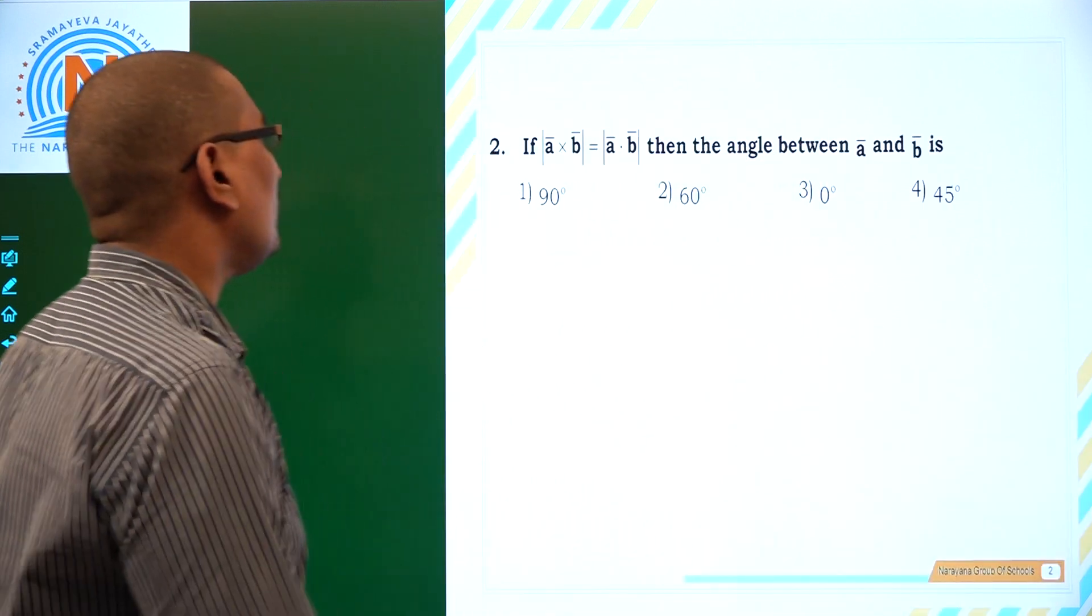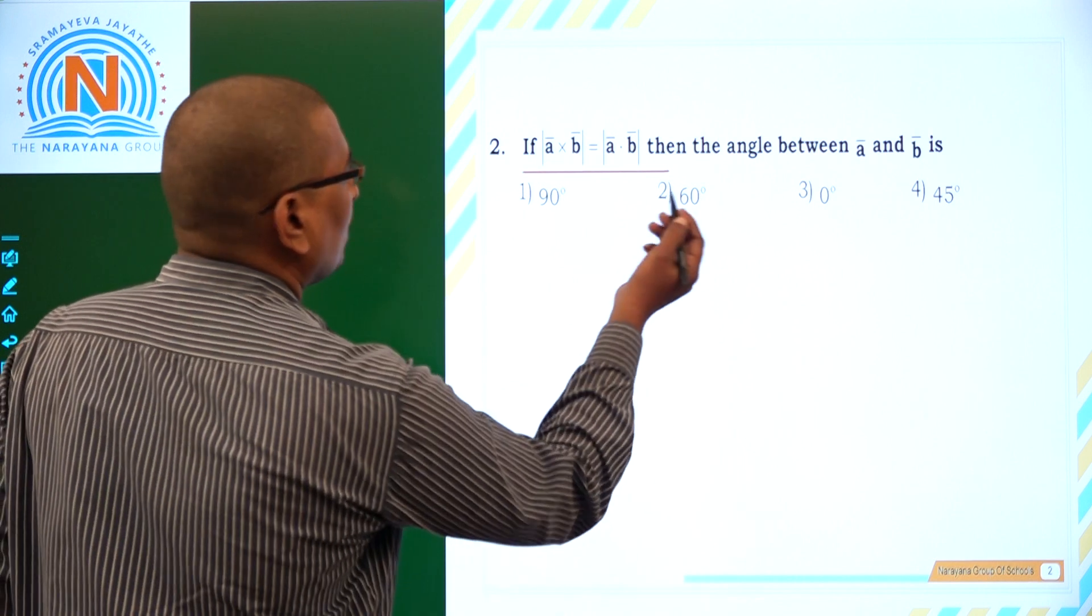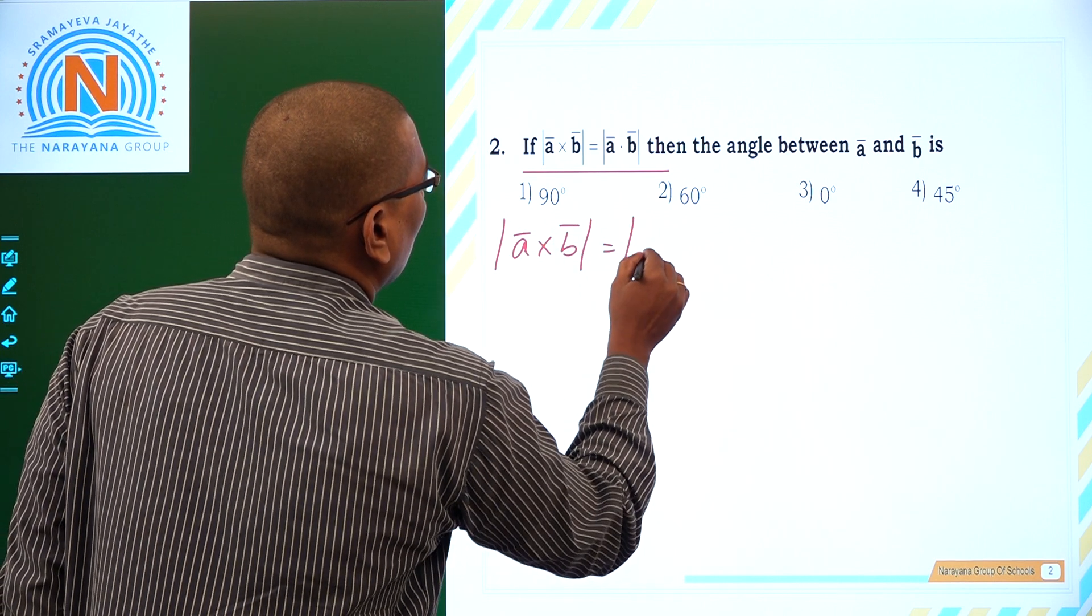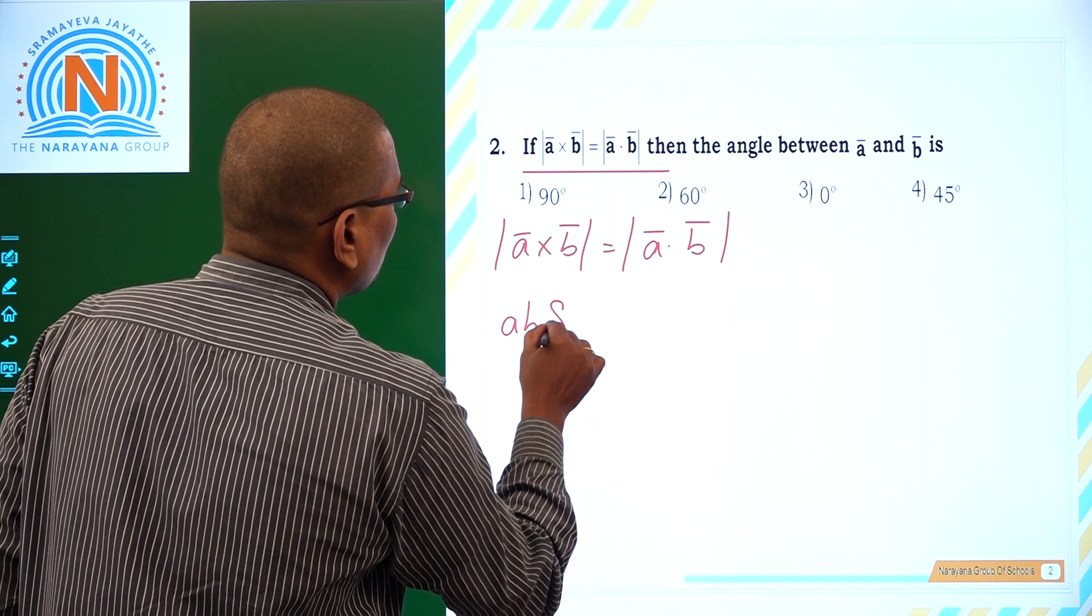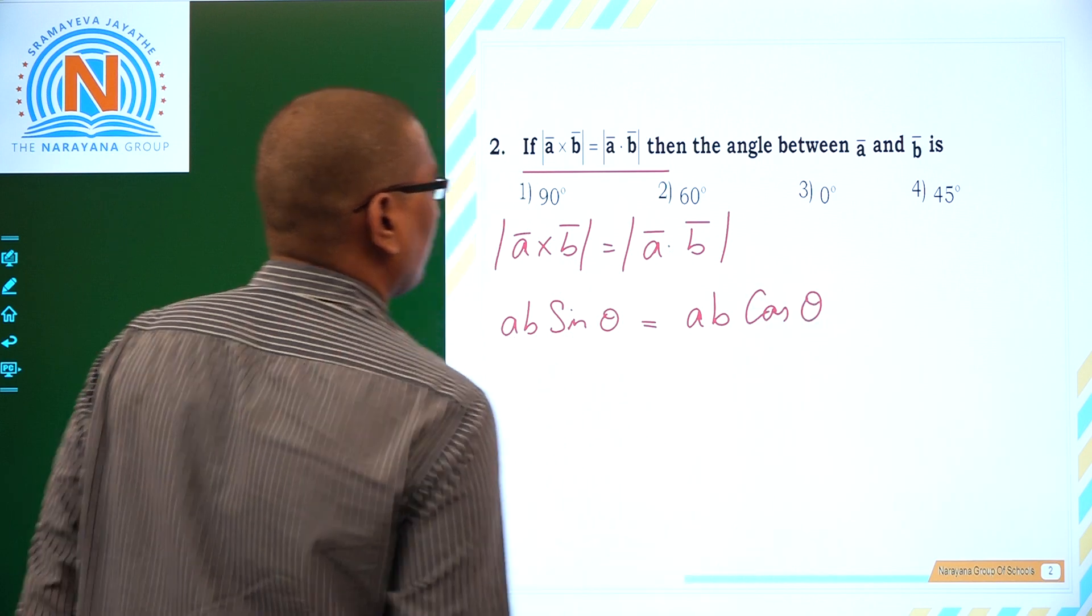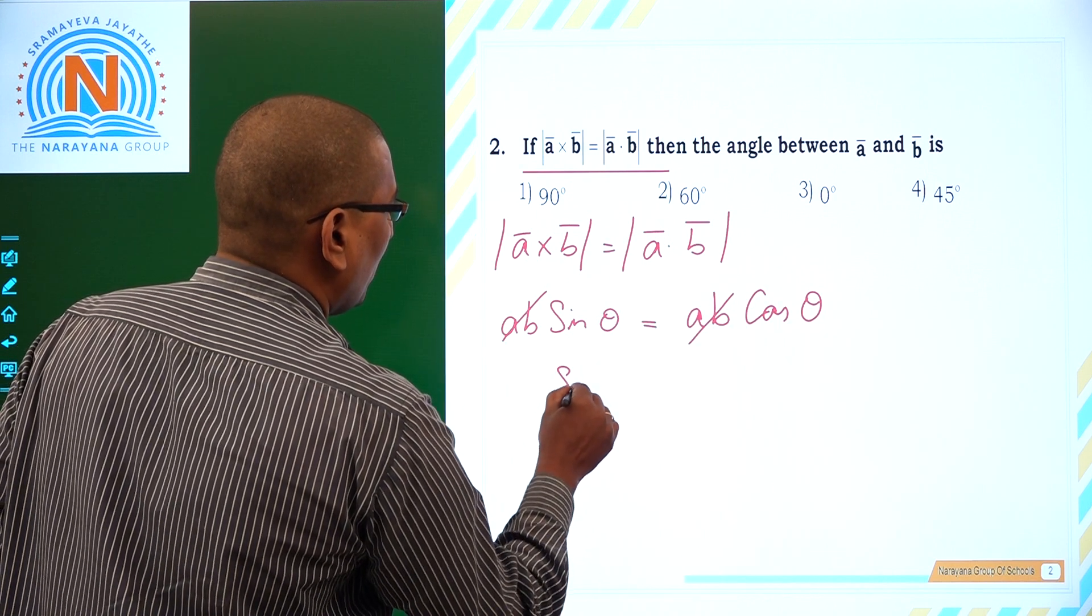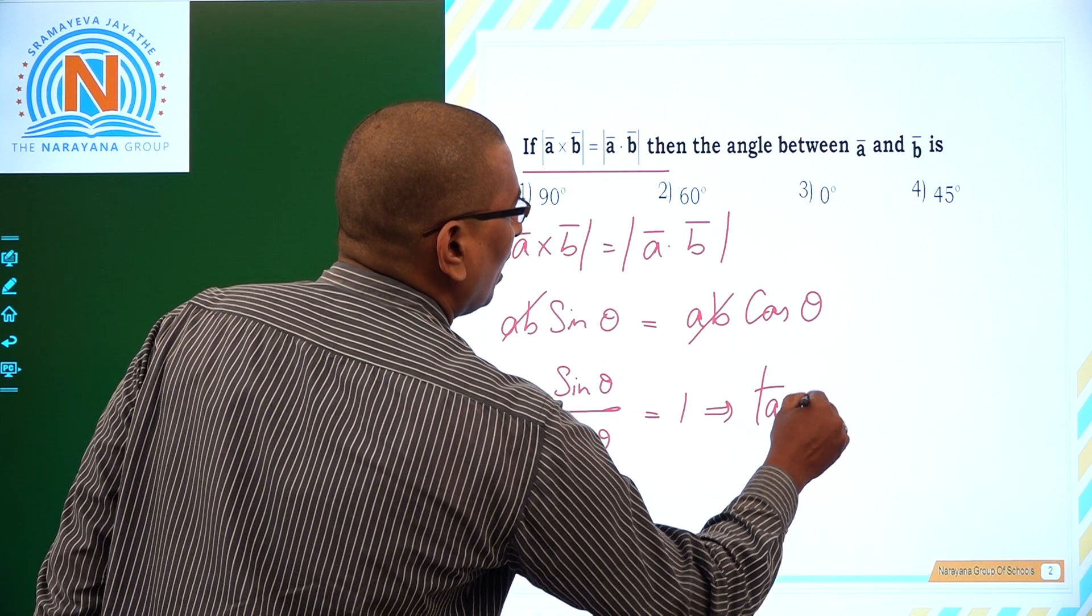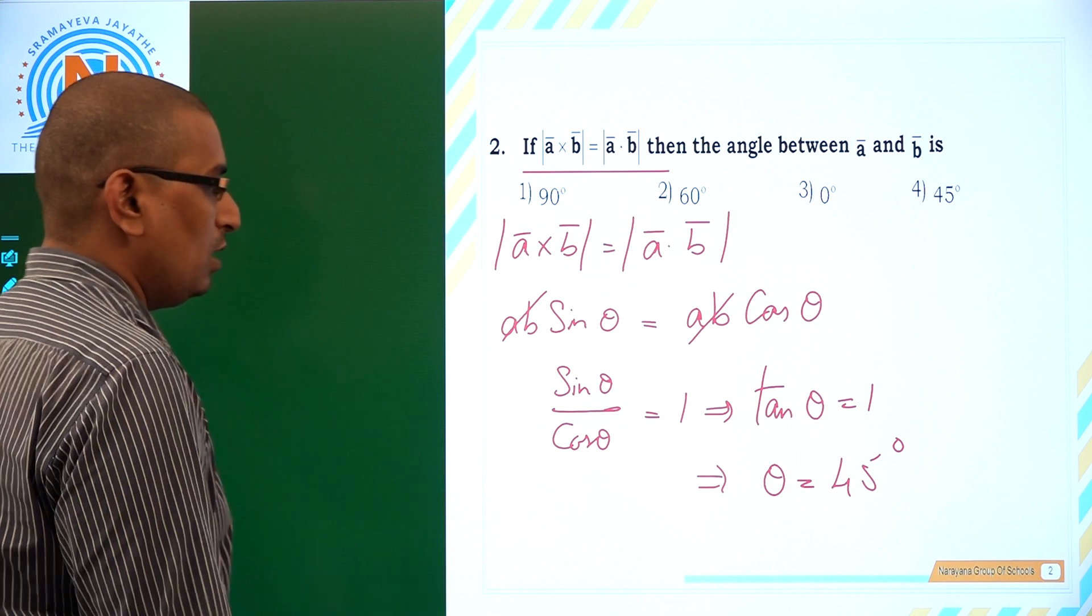If mod a bar cross b bar is equal to mod a bar dot b bar, then let us see here. So mod a bar cross b bar is equal to mod a bar dot b bar. So here which is ab sin theta and which is equal to, as I said, it is ab cos theta. So ab gets cancelled out and you get this cos theta inside, then it will be sin theta by cos theta is equal to 1. And that implies tan theta is equal to 1 and it says theta is equal to 45 degrees, which is your option 4.